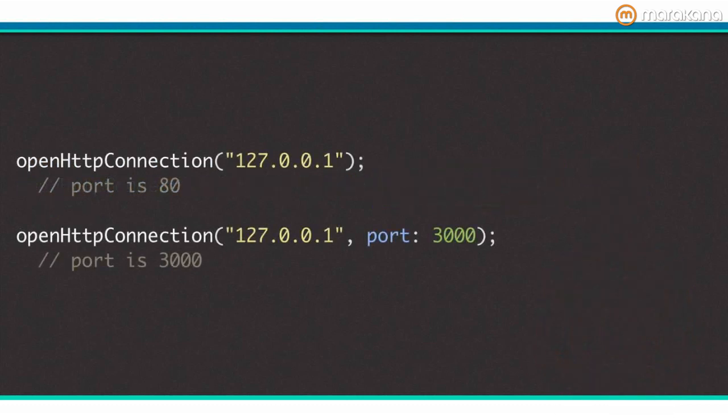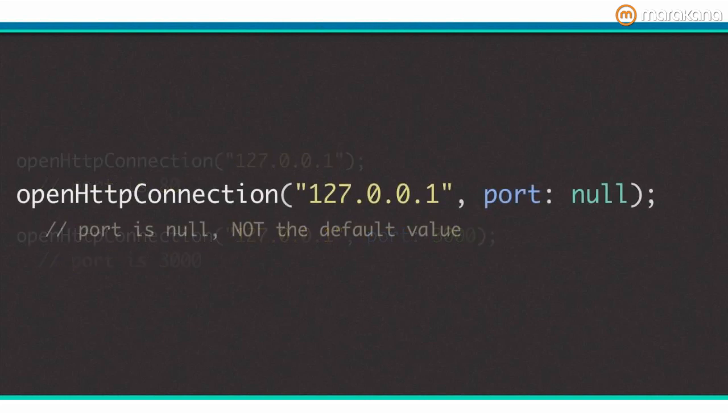Here are some examples of using this function. However, here's an example that might not be totally clear. Notice how I am passing null as the second parameter. In this case, port will be set to null even though it has a default value. The lesson here is that default values are only applied if the caller does not supply any value for the parameter. This means to really cover your bases, you should check for null even when you use default values.